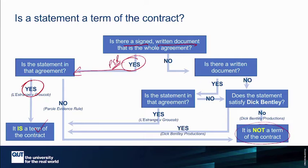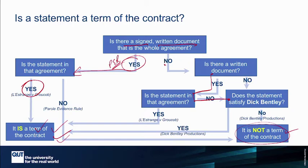If there's no signed written agreement, we ask: is there a written document? If yes, and the statement is in it, it's a term. If there's a written document but the statement is not in it, we apply the Dick Bentley test — if it satisfies Dick Bentley, it's a term; if not, it isn't. If there's no signed written agreement and no written document at all, we go straight to Dick Bentley: satisfies the test — it's a term; doesn't satisfy it — it's not. Together, the parol evidence rule, Lestrange v Graucob, and Dick Bentley Productions help us navigate this decision tree to determine whether something is a term or a representation.